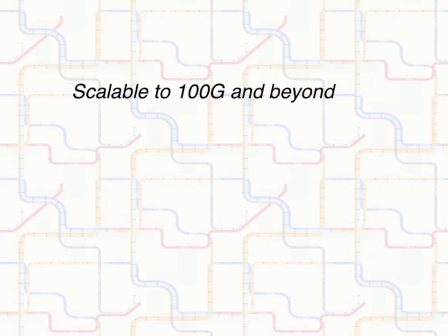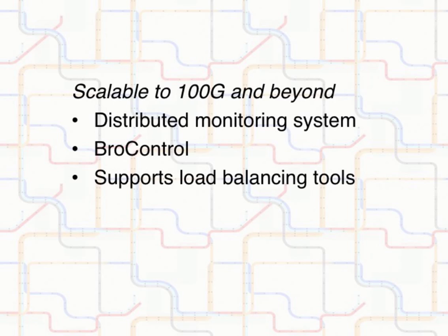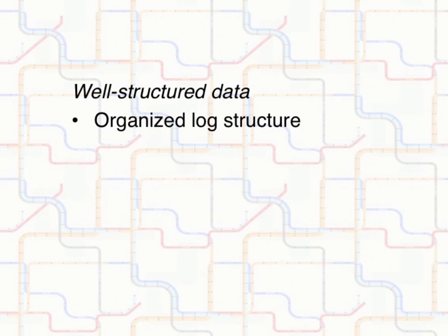You can use Bro to build a distributed monitoring system that is unified and scalable. Managing your installation is simple with BroControl, which is an interactive shell that executes commands across all systems. Bro works with load balancing tools like PF_RING to increase packet capture performance in high-volume networks.